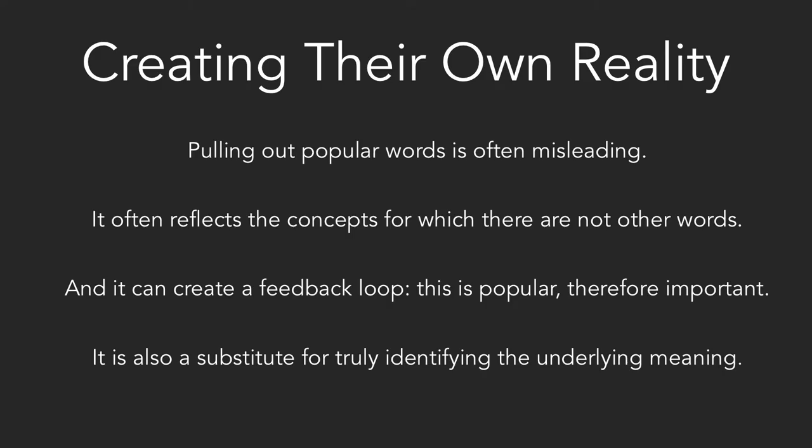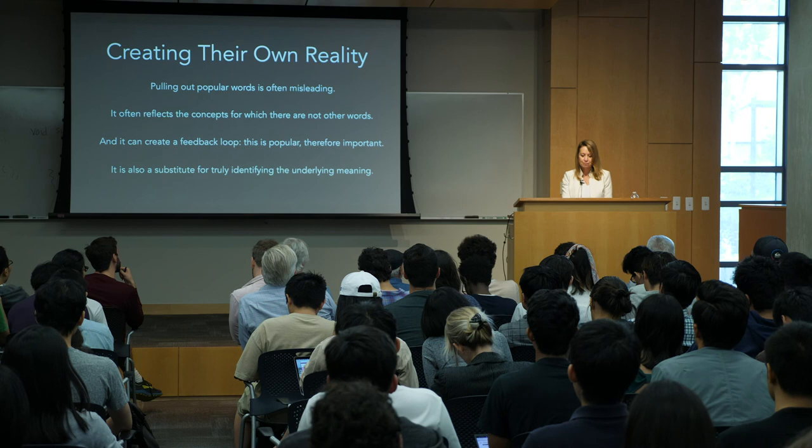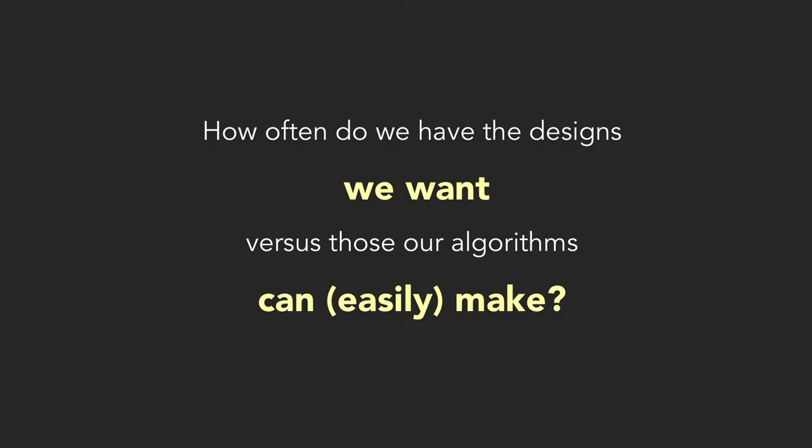People make sites asking 'what are people talking about on Twitter? Let's look at frequent words.' But pulling out popular words is often misleading — it often reflects concepts for which there are not many alternative words. A favorite example: when people were putting frequent Twitter words and saying people only search for porn — no, that's because there are only a few ways to search for porn. Lots of people search for history, but there are many different ways to search for history. When there are multiple ways to say the same thing, the most popular word doesn't surface — the category does. This can create a feedback loop: 'this is popular, therefore important,' but it often doesn't reflect reality. Disembodied words do not necessarily reflect underlying meaning. How often do we have the designs we want versus those our algorithms can easily make? I'll open it up for questions. Thank you very much.